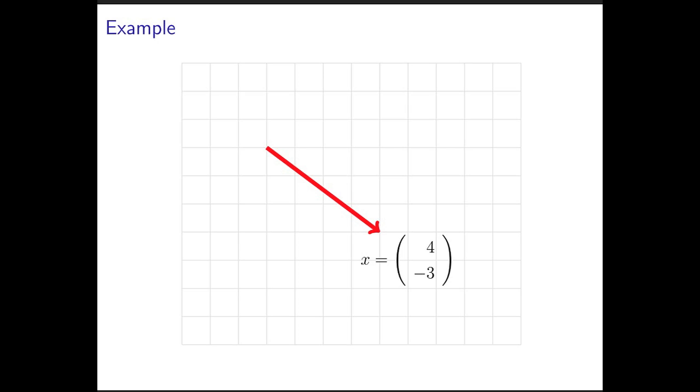Geometrically, if we're given a vector in two dimensions with components 4 and minus 3, we go over 4 and down 3. Its length is given by the Euclidean length, which is the square root of 4 squared plus 3 squared, which in this case is 5.